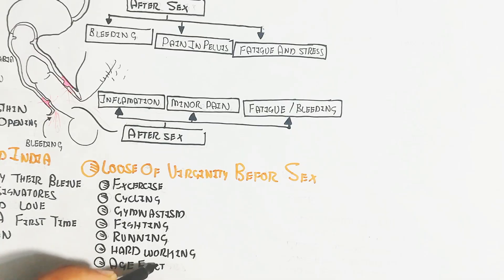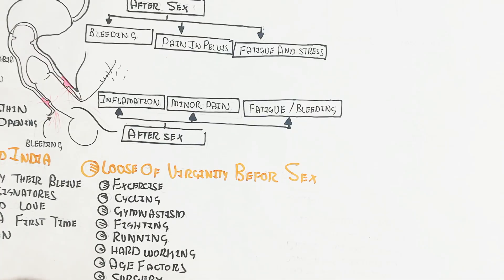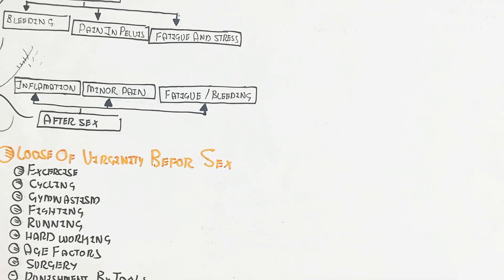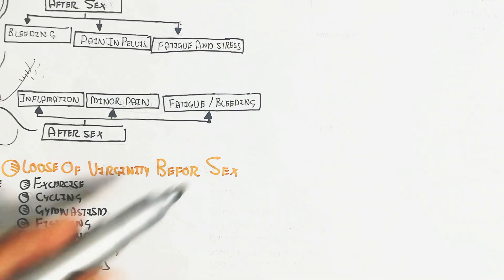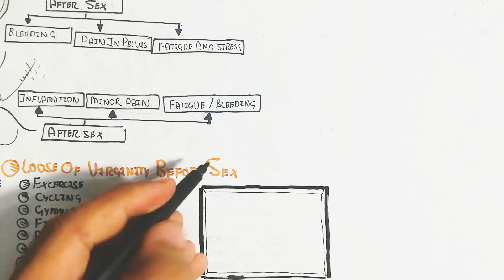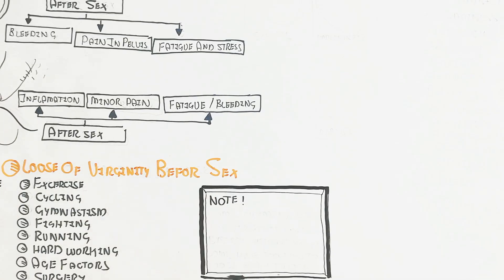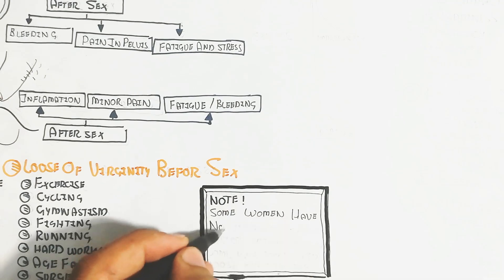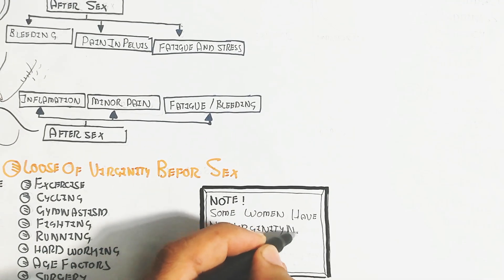These can lead to loss of virginity before sex. Important to note that some women have no virginity naturally by birth, without hymen. Some have hymen too thin to lose early in life.